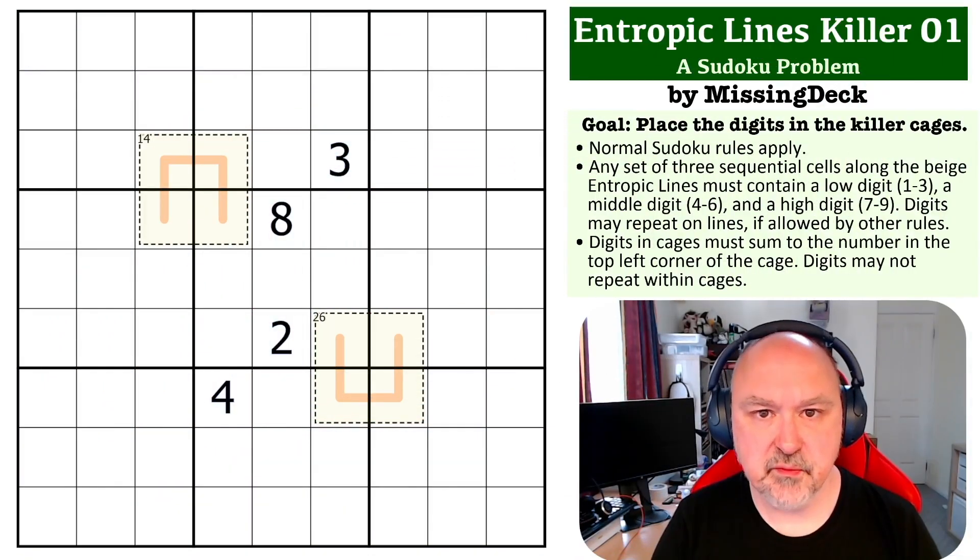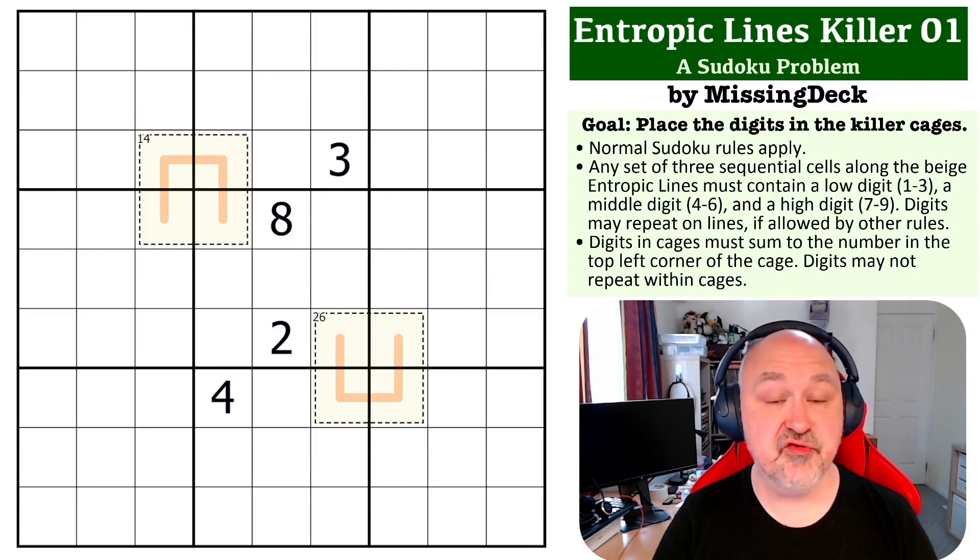Hey, this is Bremster, and this is the next problem in my Sudoku Problems series. This is an Entropic Line Killer problem submitted by FullDeck and Missing a Few Cards, who go by the name Missing Deck for the Sudoku Problems series. Thank you for submitting all the problems that you do. I will get to them in time, I promise.